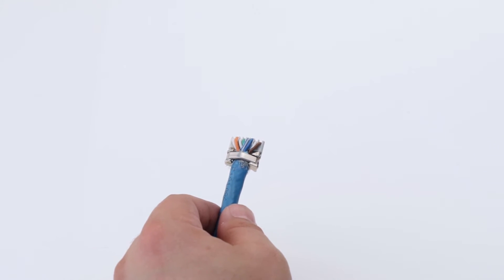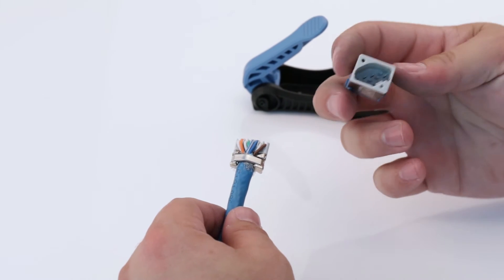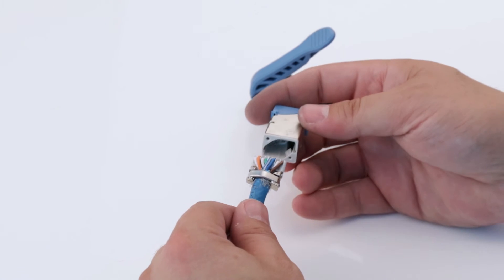Finally, terminate the cable. Properly position the termination module and insert the module as far as possible into the DM keystone jack.